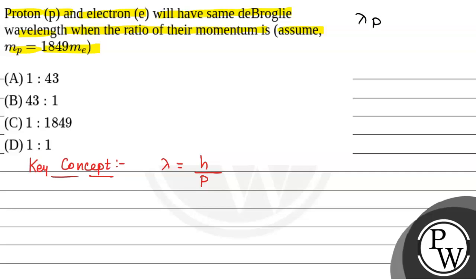We have been given lambda of proton is equal to lambda of electron—that is, proton and electron have same de Broglie wavelength. So we have h by momentum of proton is equal to h by momentum of electron.